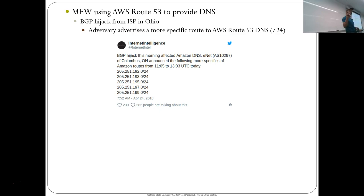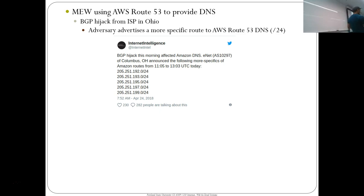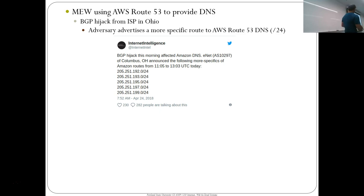This is basically what happened to MyEtherWallet. MyEtherWallet is Ethereum's original wallet — the thing people use to store cryptocurrency, with a lot of dollars associated with it, so a huge target. Their DNS was using Amazon's Route 53. The adversaries decided to hijack all the names — anyone using AWS Route 53, they'd hijack all their queries. They advertised a bunch of /24s they knew Route 53 was using, and because these were more specific routes than the original AWS route being advertised, they were able to route all the DNS traffic to themselves. This was attributed to Russia.